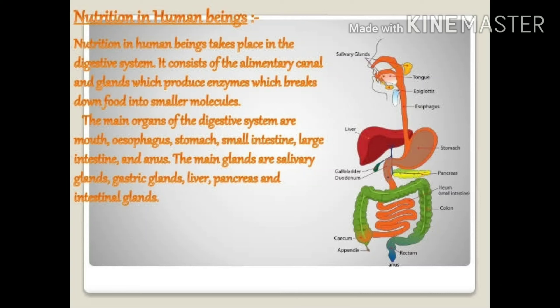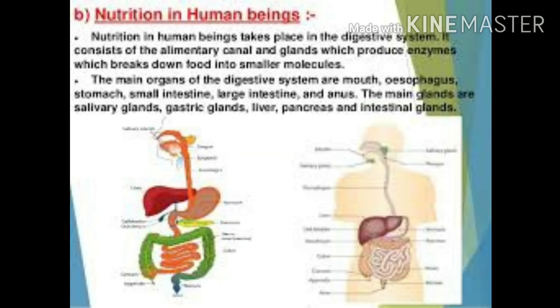Next is nutrition in human beings. Nutrition in human beings takes place in the digestive system. It consists of the alimentary canal and glands which produce enzymes that break down food into smaller molecules. The main organs of the digestive system are the mouth, esophagus, stomach, small intestine, large intestine, and anus. The main glands are the salivary gland, gastric glands, liver, pancreas, and intestinal glands.